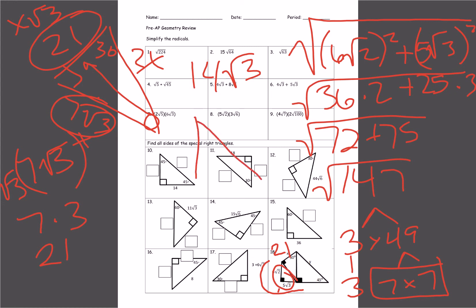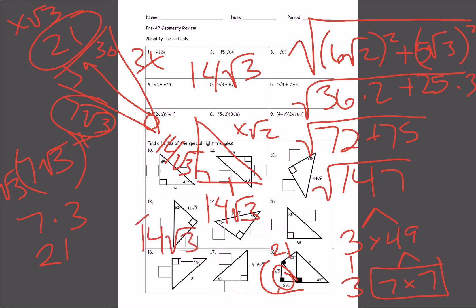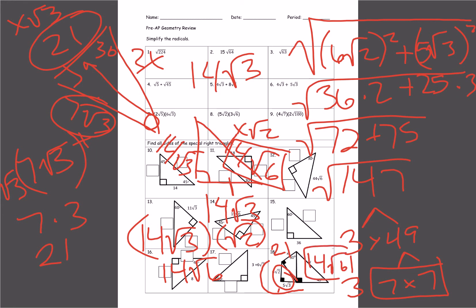That 14 square root of 3 becomes the leg of a 45-45-90, so both legs are 14 square root of 3. Since this is the X square root of 2 side, that's going to be 14 square root of 3 times square root of 2, which gives 14 square root of 6. That problem scared everybody, but it really isn't as hard as you'd think if you just go step by step. This is going to be on your test on Wednesday. I hope this helps — thanks so much, bye.